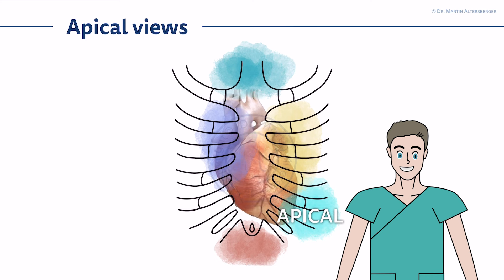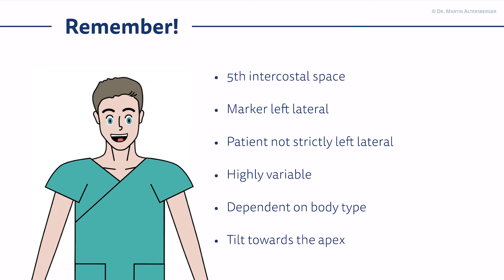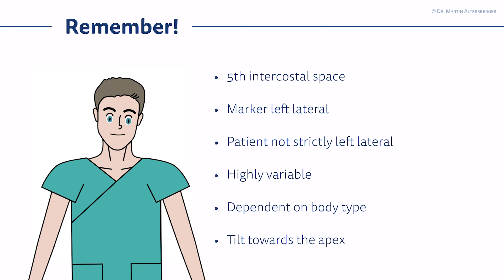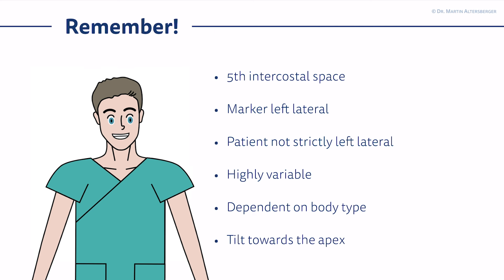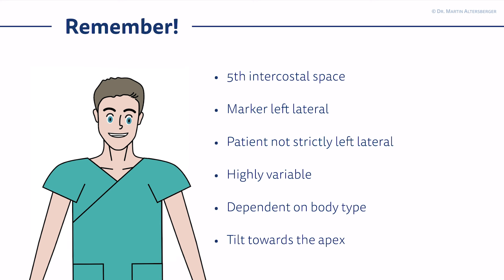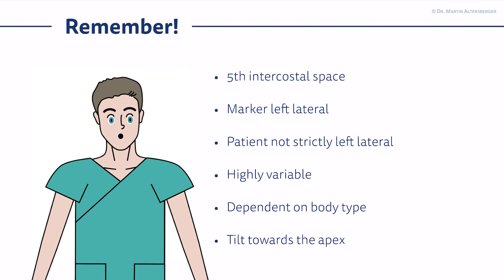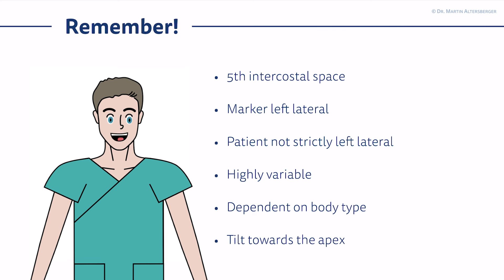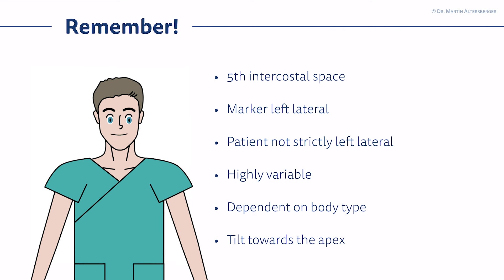Keep in mind it's highly variable. The marker should point in the cardiac preset to the left lateral of the patient. The patient should not be strictly in the left lateral position compared to the parasternal views, because you need a little more space for the transducer on the lateral side. The view overall is highly variable and highly dependent on body type. You should tilt the transducer towards the left ventricular apex to actually find the four chamber view.